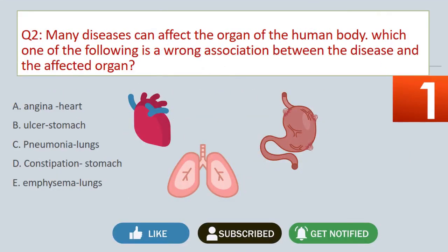Question No. 2. Many diseases can affect the organs of the human body. Which one of the following is a wrong association between the disease and the affected organ? A. Angina — heart. B. Ulcer — stomach. C. Pneumonia — lungs. D. Constipation — stomach. E. Emphysema — lungs.